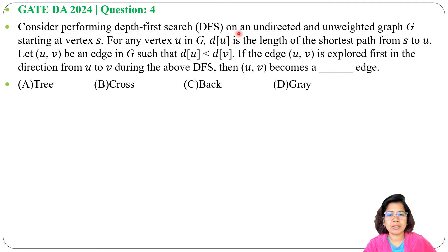Consider performing depth-first search DFS on an undirected and unweighted graph G starting at vertex S. For any vertex U in G, d[u] is the length of the shortest path from S to U.